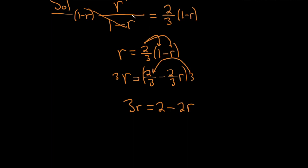You know, we could have done that up here as well, just multiply by the 3 right away to clean it up. Add 2r to both sides. Boom, so we get 5r equals 2.